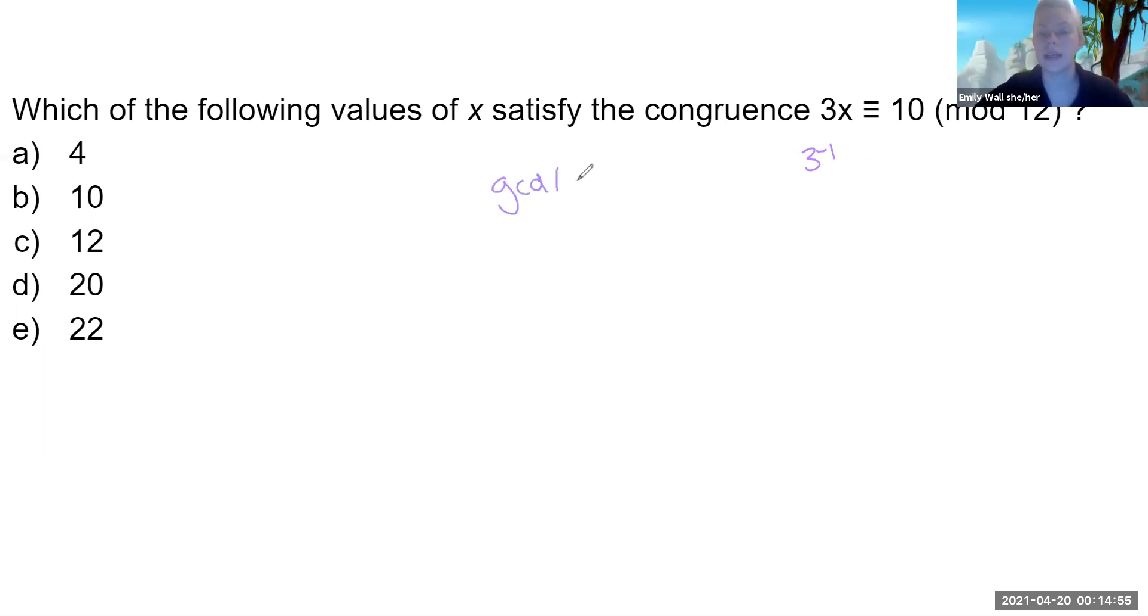For an inverse to exist, we need the multiplier, the thing that multiplies x, and the mod, so 3 and 12 in this case. The greatest common divisor needs to be 1, as in the largest integer that evenly divides both of these numbers.